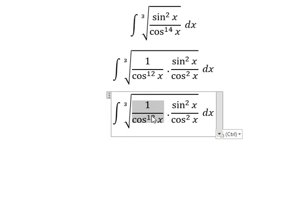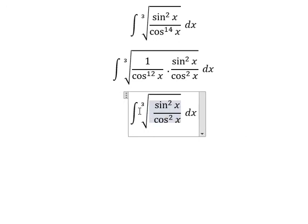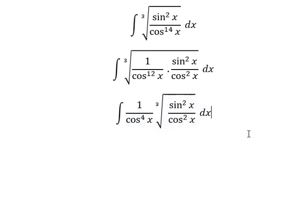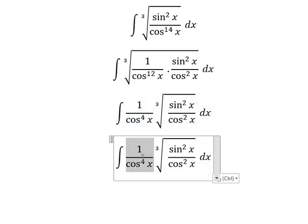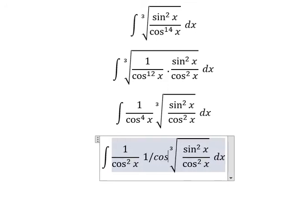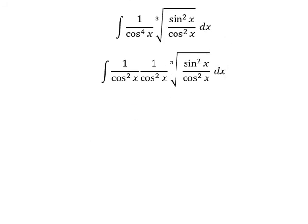After we put this one outside, so this one we can put into 1 over cosine x square and 1 over cosine x square. Next we have the formula in here.